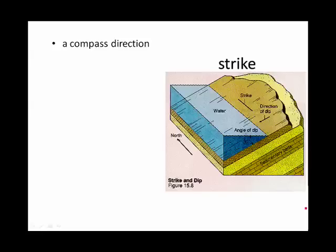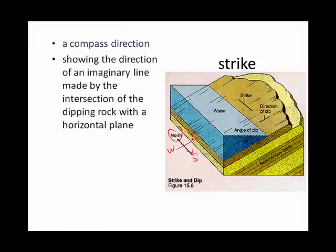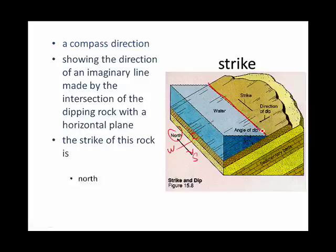Geologists also want to describe the direction in which the rock layers are tilting. In this, you'll notice that we've got north. If we wanted to, we could always put in west, east, and south. And we have a tilting rock layer. The compass direction is given by the strike. The strike is the direction of an imaginary line made by the intersection of the dipping rock with a horizontal plane. In other words, this line right there. That has a strike. In this case, the strike of this rock is north.